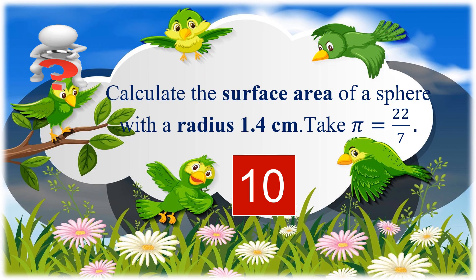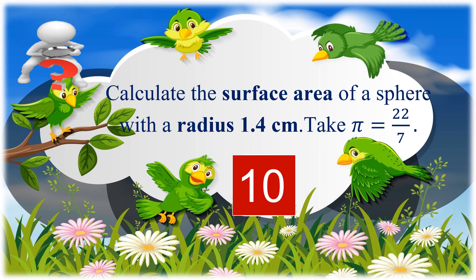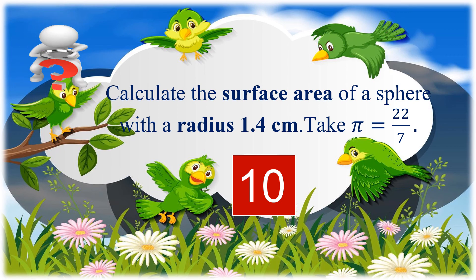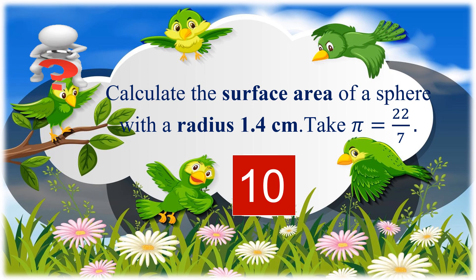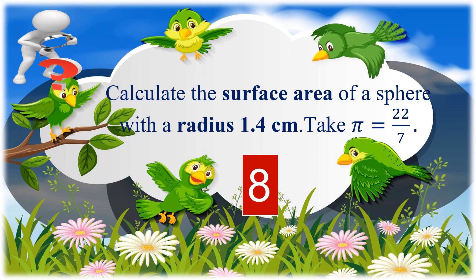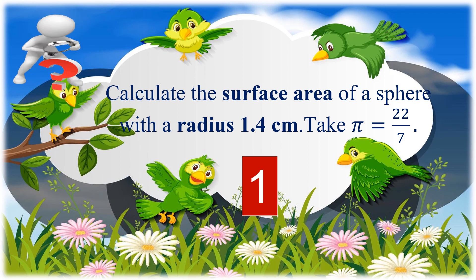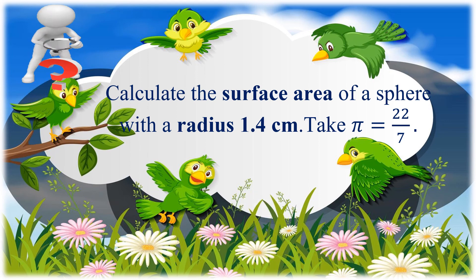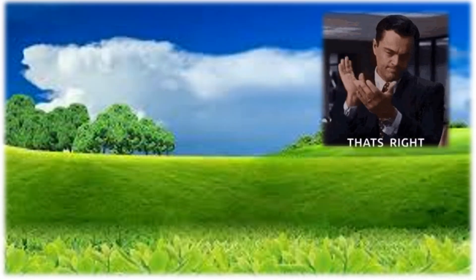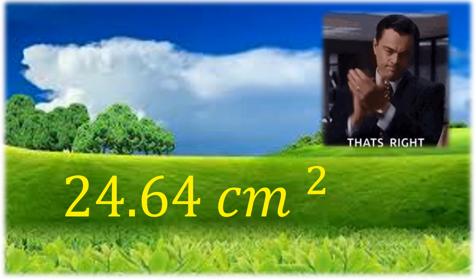Now let us have a short quiz. Calculate the surface area of a sphere with a radius of 1.4 centimeters, taking pi equal to 22 over 7. You have 10 seconds to answer. The answer is 24.64 square centimeters.